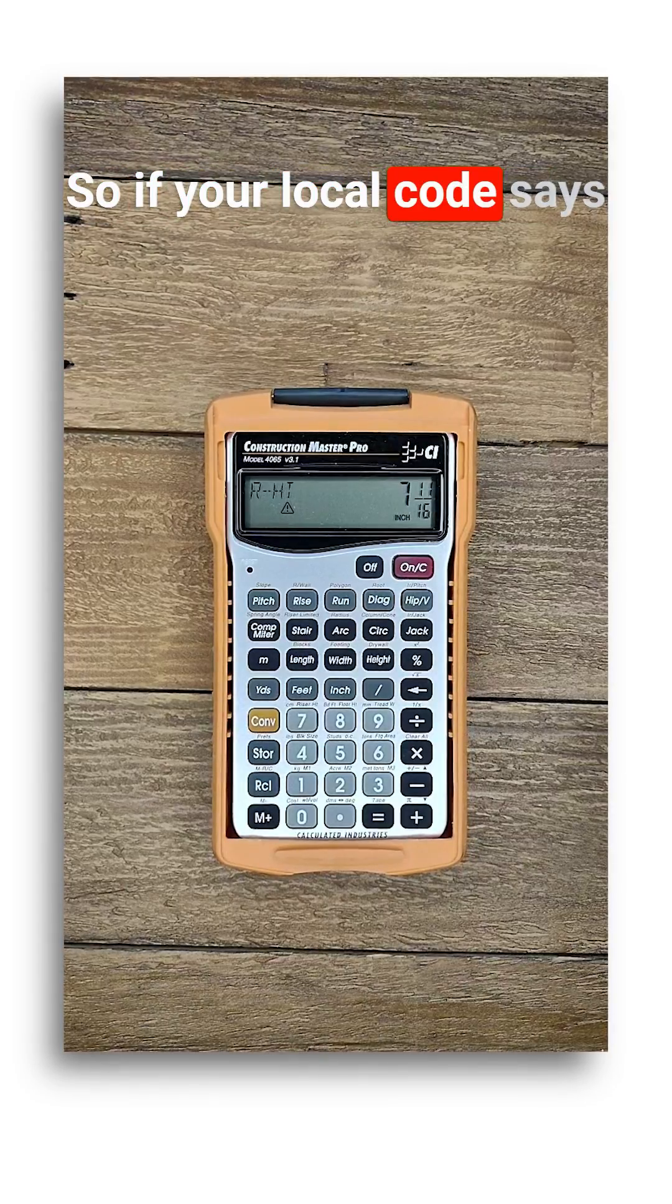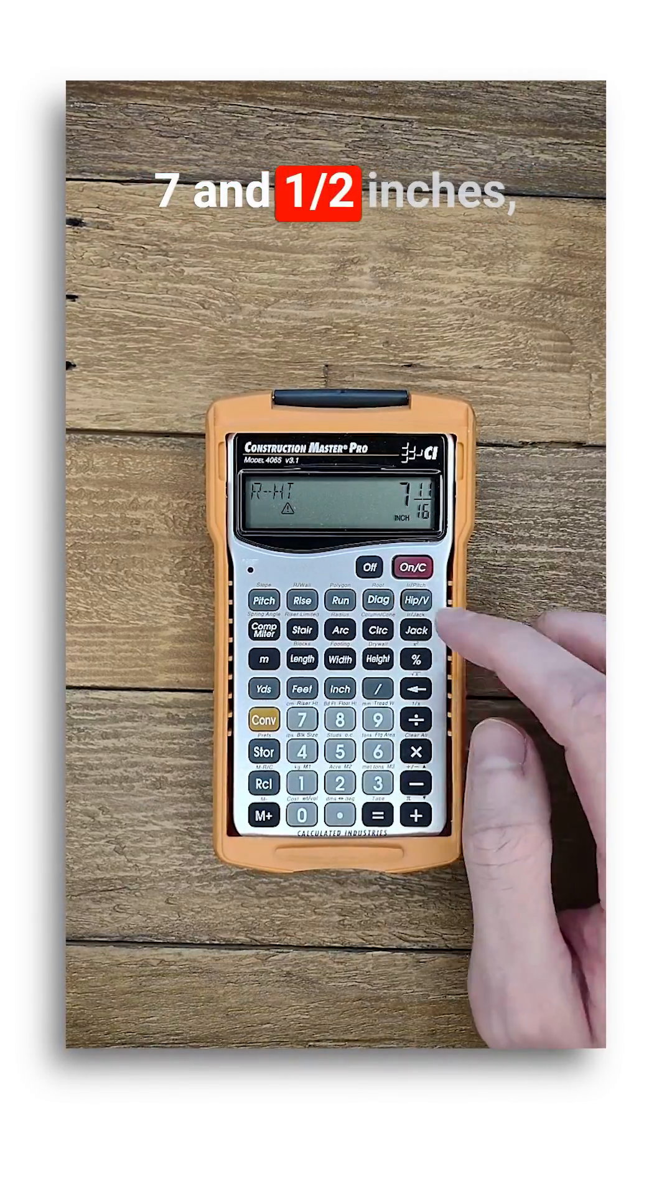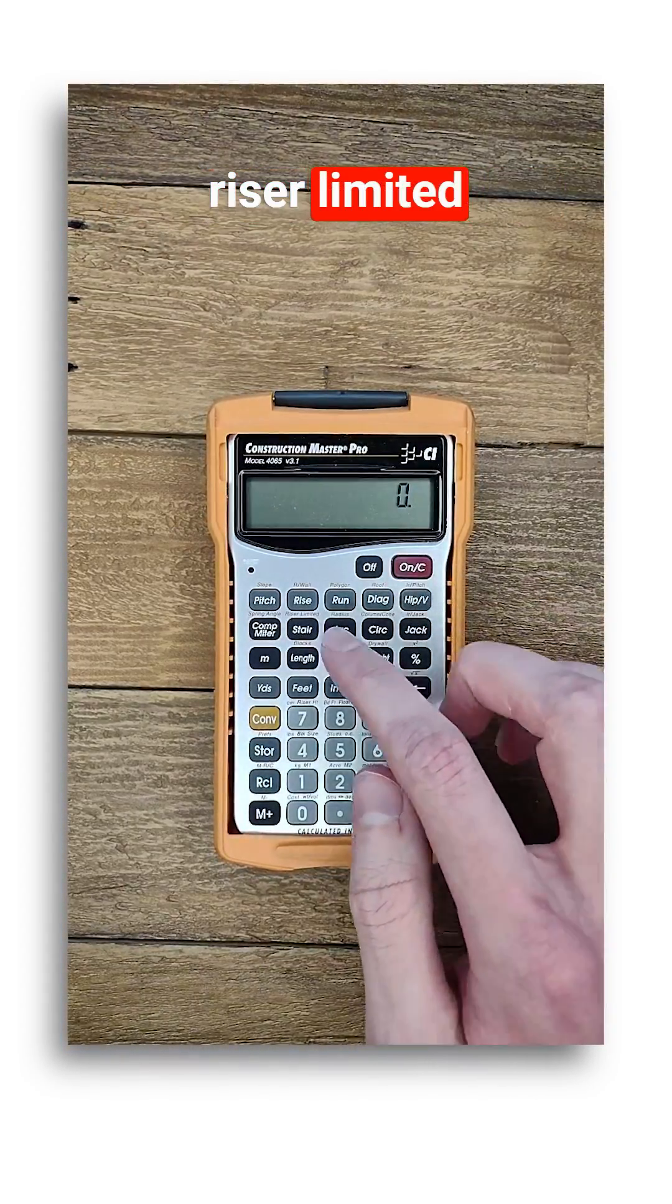So if your local code says risers can't exceed seven and a half inches, you'll want to use the riser limited function like this.